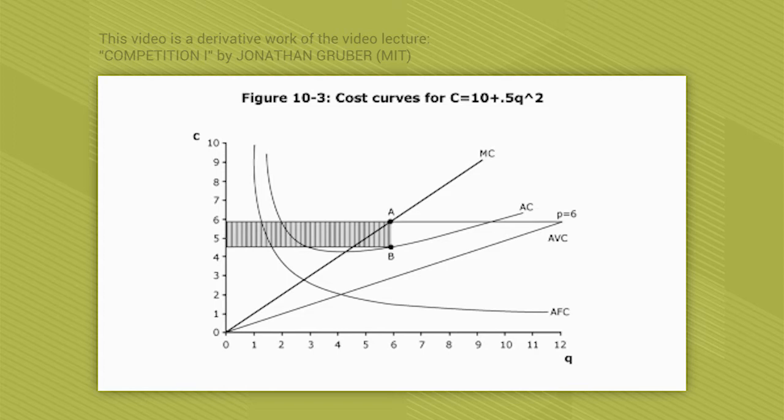We also on this diagram have a demand curve. The demand curve is perfectly elastic facing this firm. It's a perfectly competitive market. And that perfectly elastic demand curve is horizontal at price equals 6.